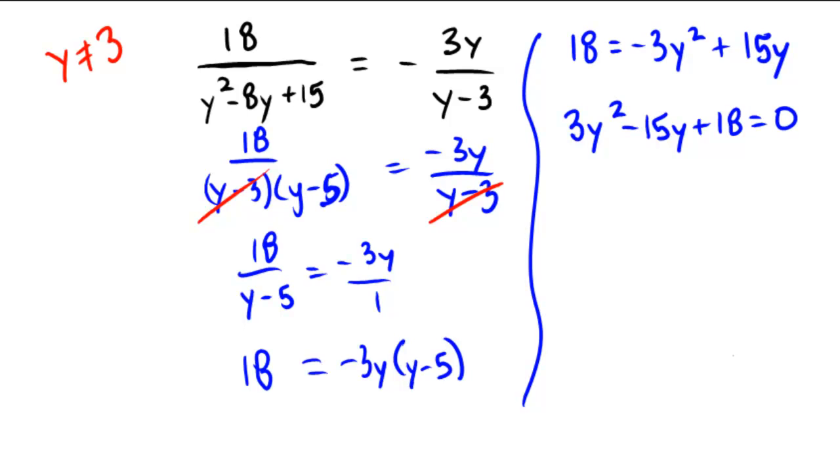Can anyone see a GCF there? What could I divide by? Let's get rid of the common 3. Divide by 3, divide by 3 to give us 1, divide by 3 for 5, and divide by 3 for 6.